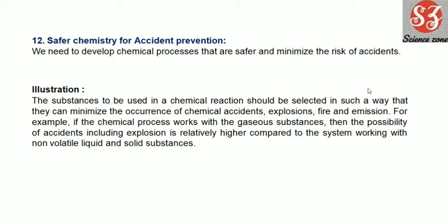For example, radioactive emissions involve gamma rays and alpha rays that can penetrate the body and cause cancer. So we should not use chemicals or reactions in which there is a risk of chemical accident, explosion, fire, or harmful emission. When working in a chemical industry with gas substances, risks increase — gas cylinders can explode and fires can start very quickly. We need to develop reactions that avoid gases and instead use solid substances or non-volatile liquids, which are less hazardous and less likely to cause accidents.